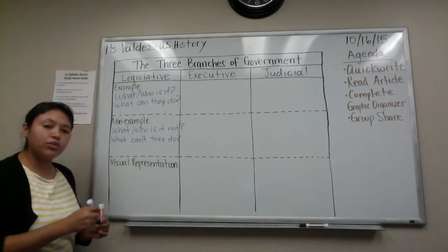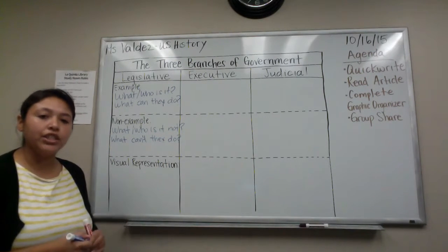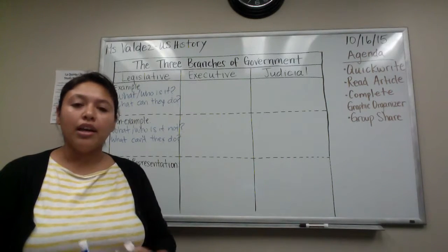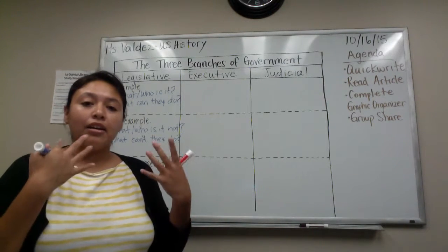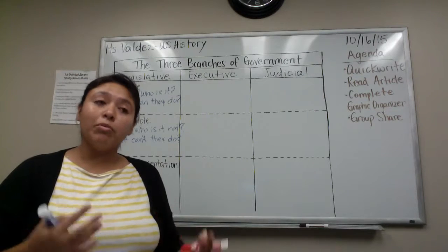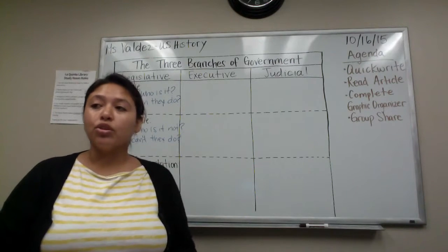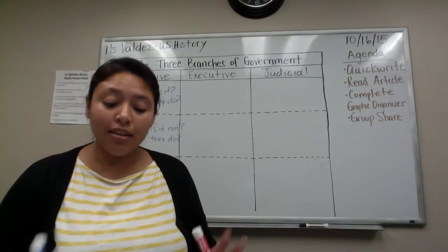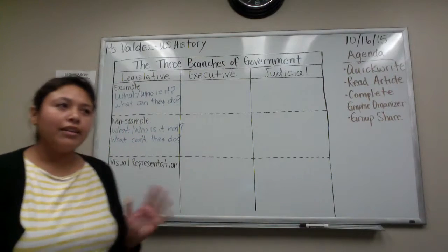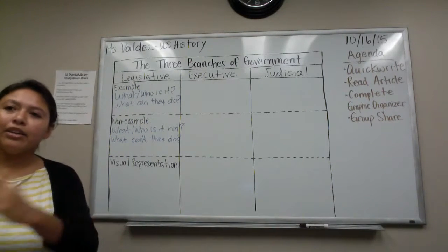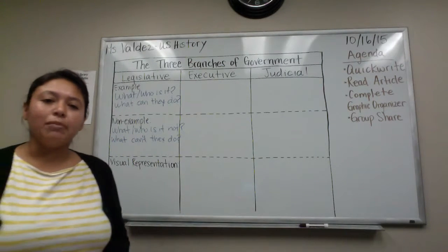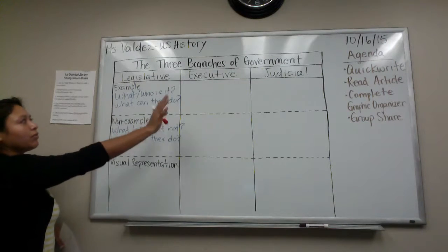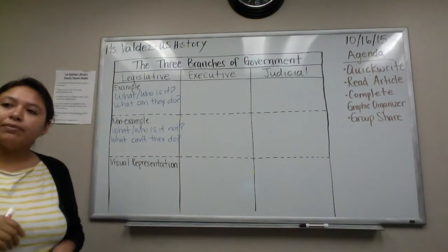And of course the last row is the visual representation. You can draw anything — an actual person or people, a building, a symbol — anything you can think of. So can anybody give me an example of what would go under the first row for the legislative branch?